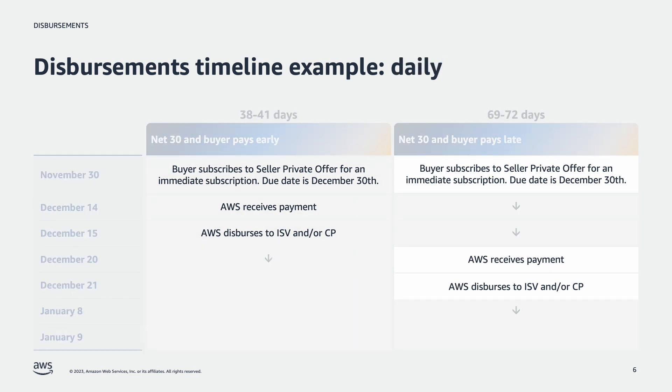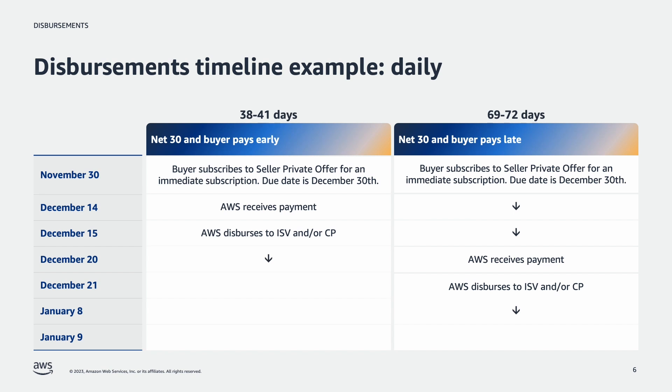Now, let's review an example where the seller has selected the daily disbursement preference. If a buyer is subscribed to a seller private offer for an immediate subscription on November 30th, the due date on Net 30 terms would be December 30th. If AWS receives the payment on December 14th, the payment would disburse to the partner on December 15th. If AWS receives the payment on December 20th, after the December 15th window, AWS will disburse to the partner on the next cycle, falling on December 21st.